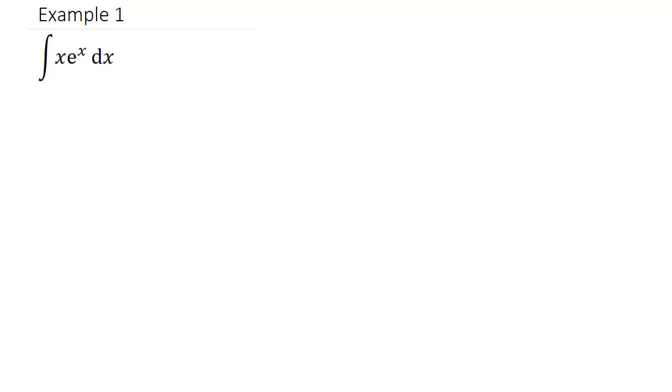So we want to let dv equal the more complicated one that fits one of the integration rules, and in this case you can see that that's going to be the e to the x because we have a rule for e to the x.